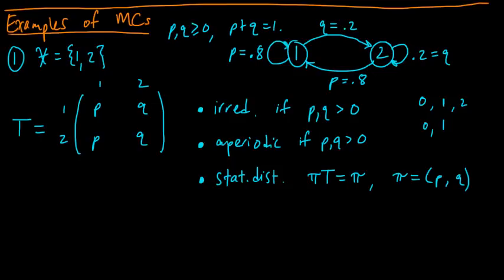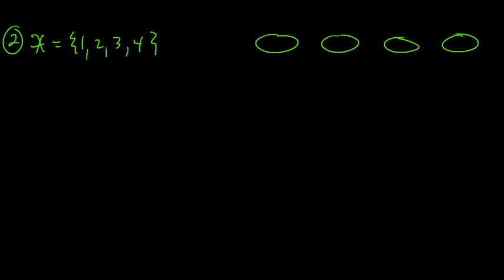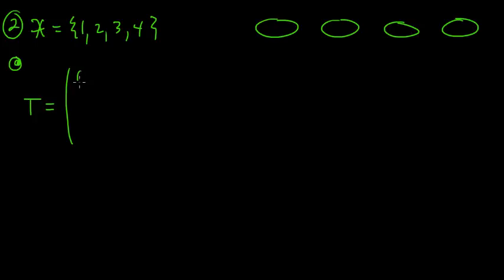We're looking at examples of Markov chains to illustrate these properties. Now we're ready for our second example, which will be on four states, so that we can draw a picture here — just to visualize. This will give us a little more leg room to exhibit some other interesting behaviors. Rather than go through the details like I did in the first example, for these I'm just going to state the properties and leave it to you to verify them. We have a transition matrix of the following form.